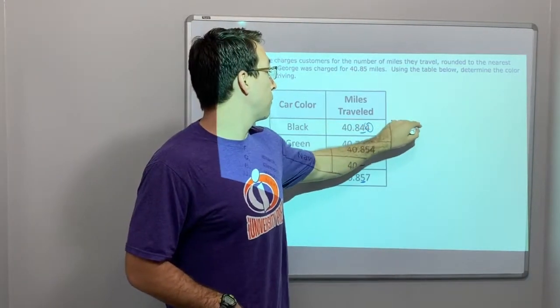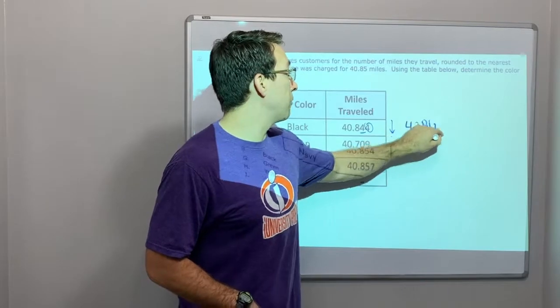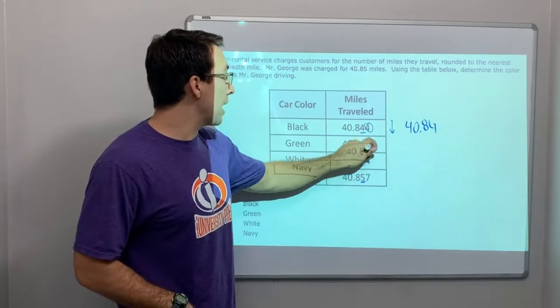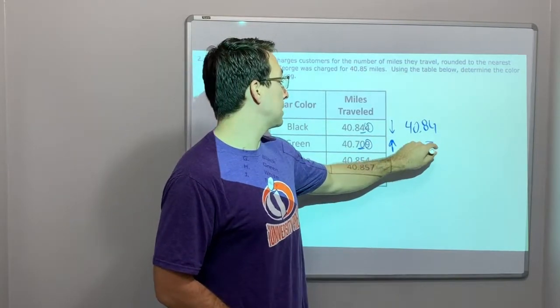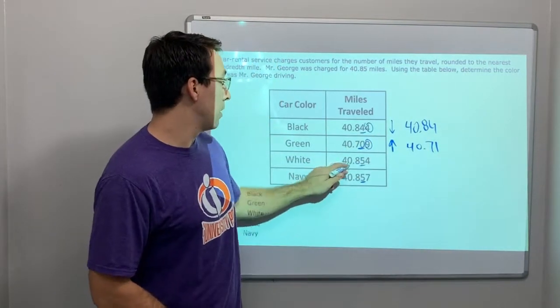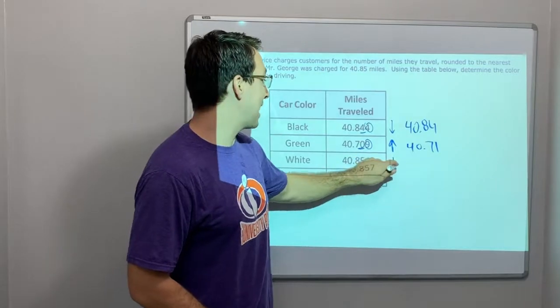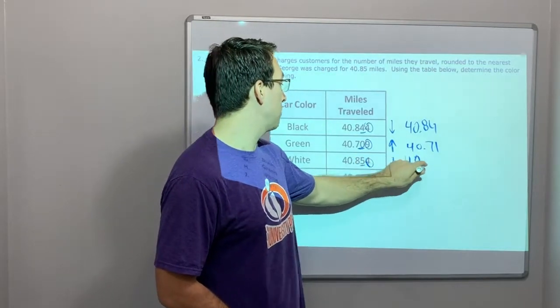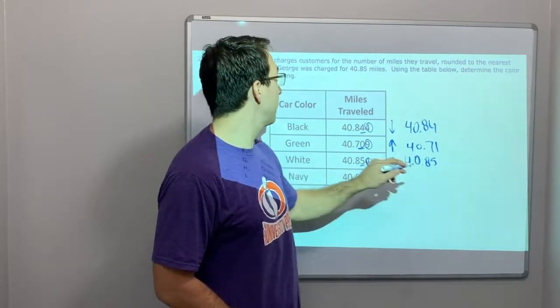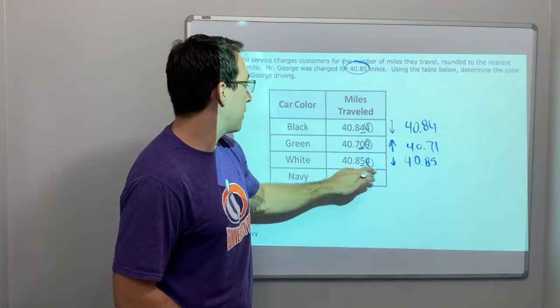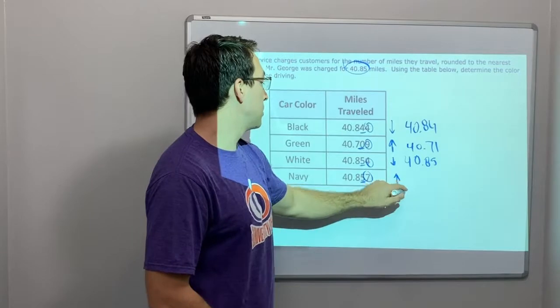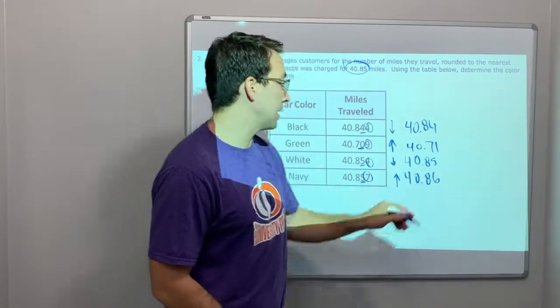So, 40.849, okay. Nine rounds up, 40.71. Four rounds down, so that would be 40.85. Oh, that was our answer. Wait. And then, look, seven goes up. So, that would be 40.86.